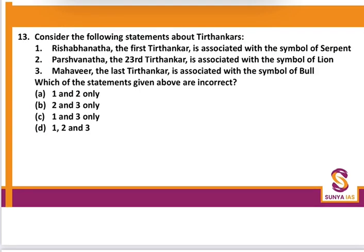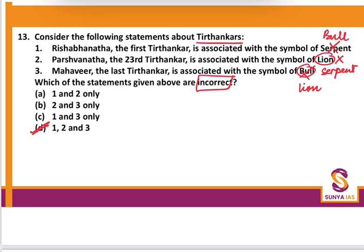Question 13: Statements about Tirthankars. Rishabhanath, the first Tirthankar, is associated with the symbol of serpent — wrong, it was the bull. Parshanath is associated with the lion — wrong, it was the serpent. Mahavir, the last Tirthankar, was associated with the symbol of bull — wrong, it was the lion. So all three statements — 1, 2, and 3 — are incorrect.